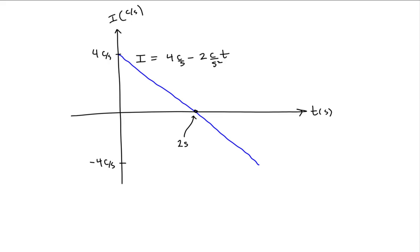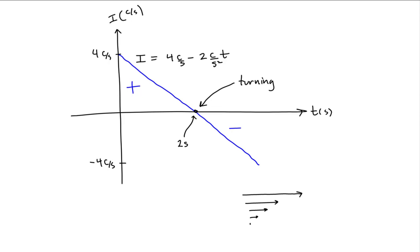Let's interpret this graph. Between 0 and 2 seconds we have a positive current, and between 2 and 4 seconds we have a negative current. There is a point at which the current changed direction. The current was initially moving in one direction, getting smaller and smaller in magnitude, until at t equals 2 seconds there is no current. Then the current reverses direction, growing larger linearly in the opposite direction.